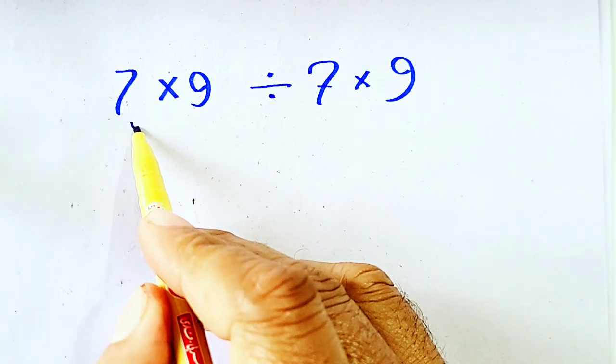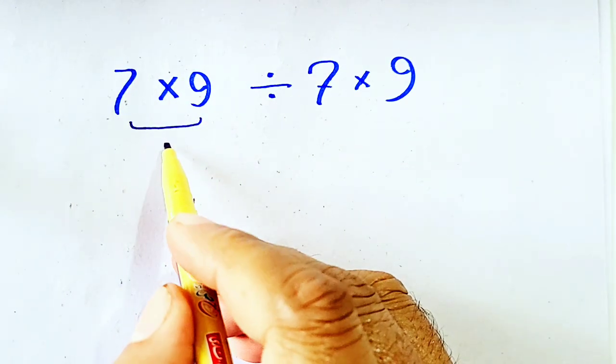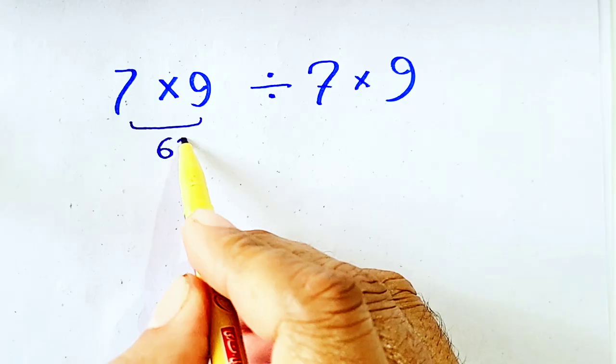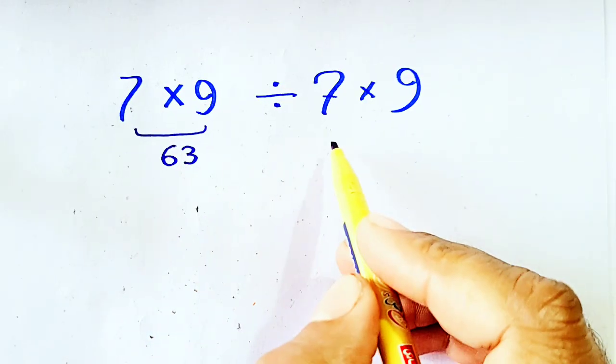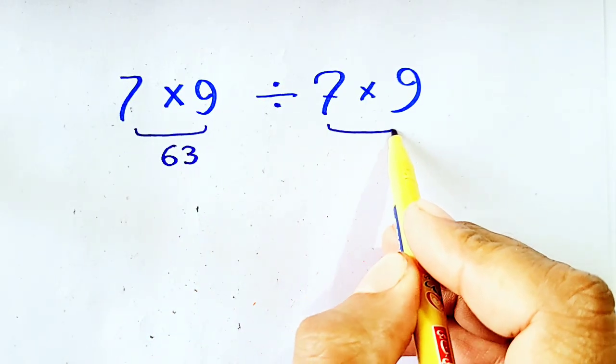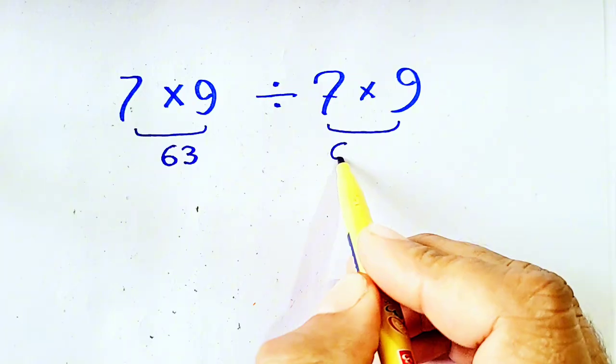It's 7 times 9, which will be equal to 63, and it is 7 times 9, it is 63.